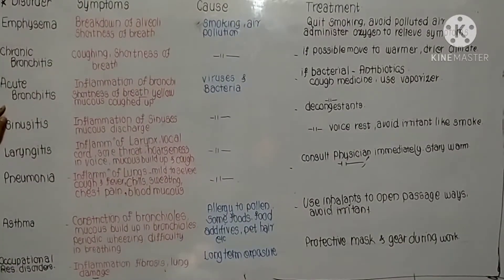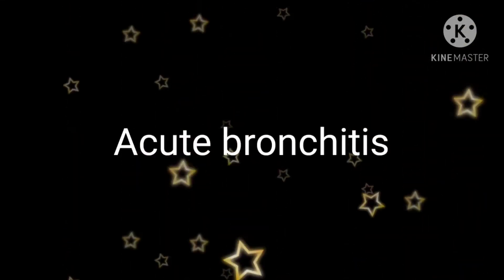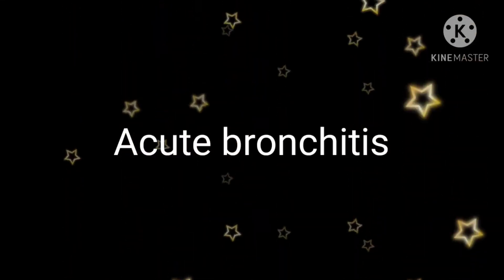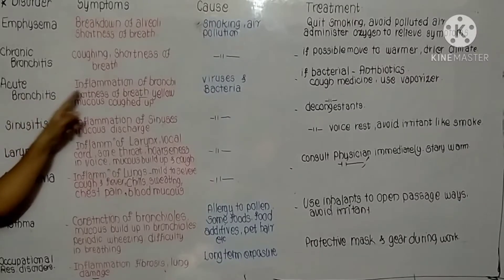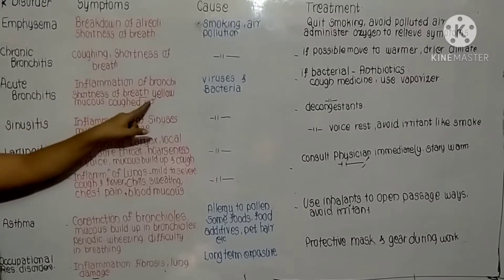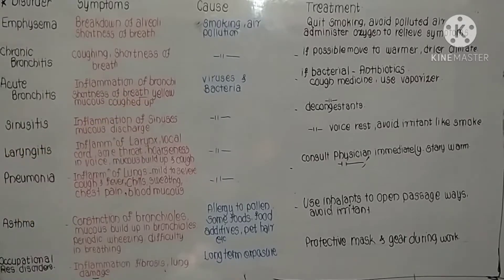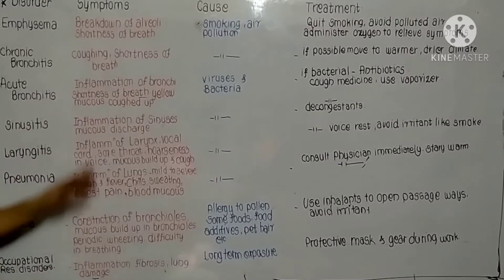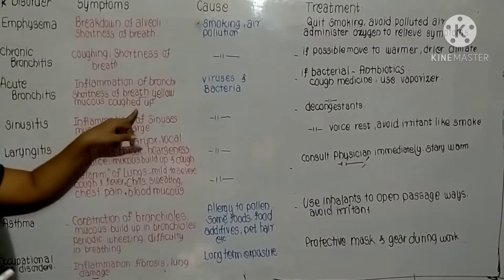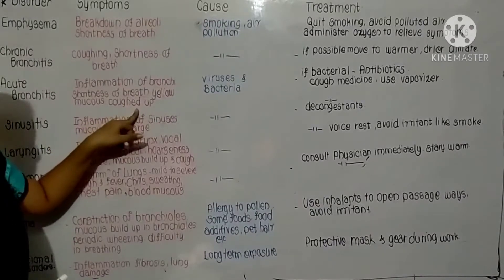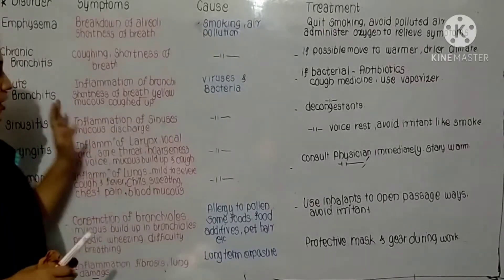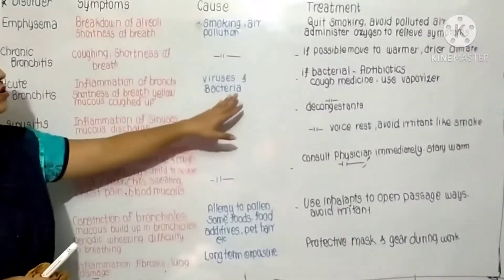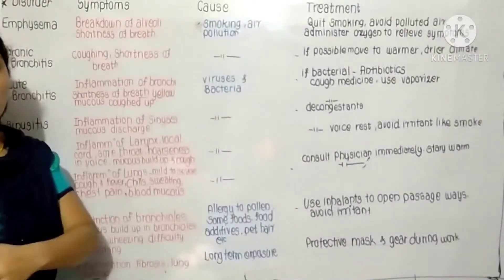The next disorder is acute bronchitis. In acute bronchitis, there is inflammation of the bronchi, shortness of breath, and yellow mucus discharge. The causes are viruses and bacteria — doctors refer to this as a viral infection.